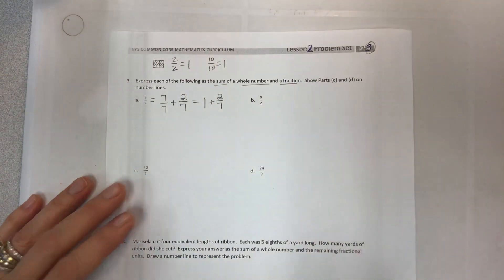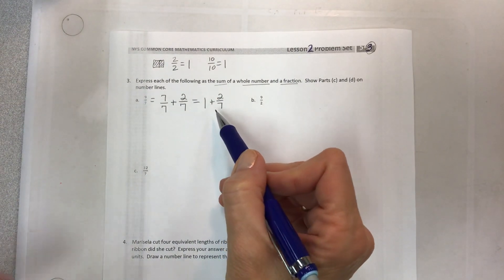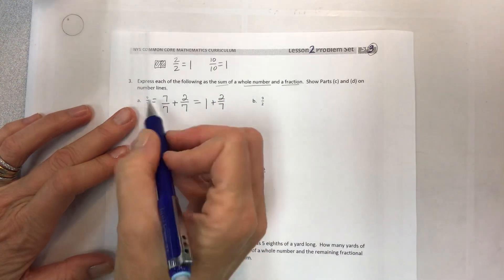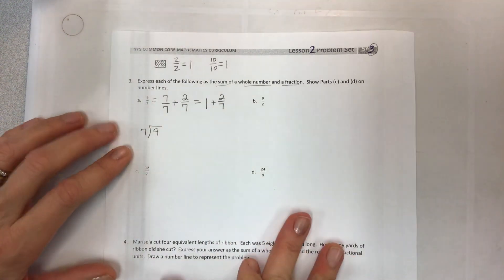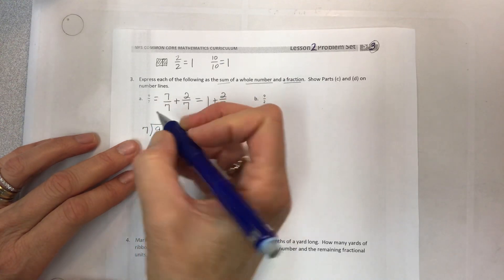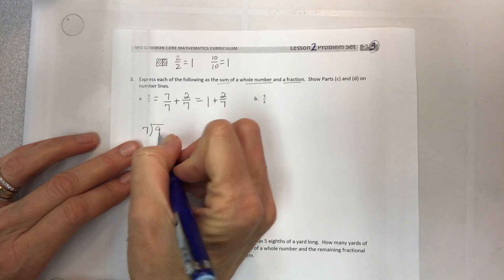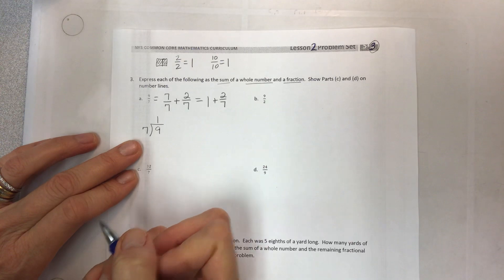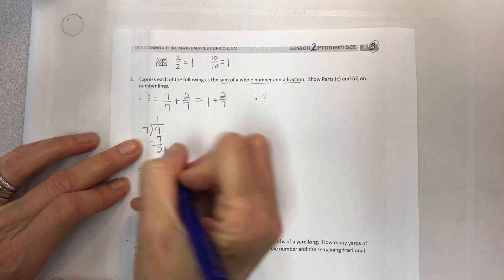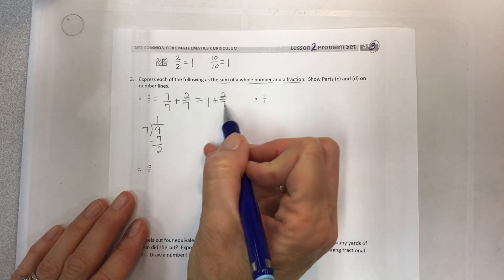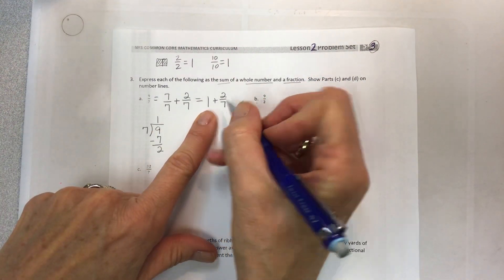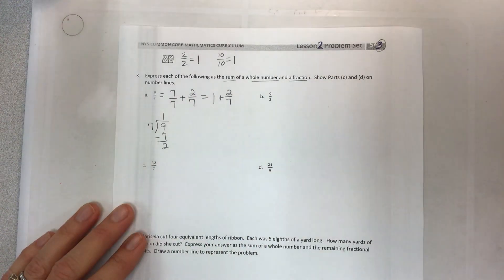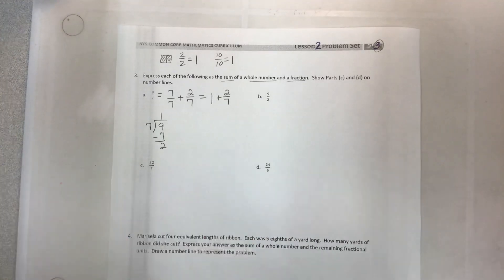So the whole number is one plus two sevenths — that's your whole number and a fraction. Remember, the fraction bar is a division sign, so let's take nine and divide by seven. Nine divided by seven: I can fit one seven into nine, multiply to get seven, subtract to get two. That looks like one and two sevenths. This division problem can be shown as one and two sevenths, or seven sevenths plus two sevenths, or nine sevenths — you can show it in different ways.